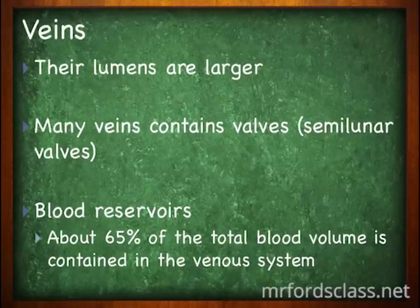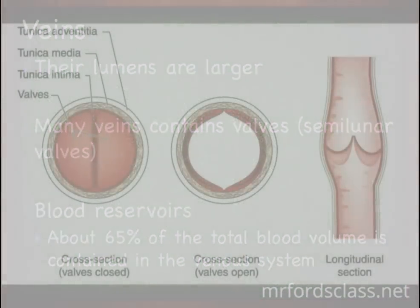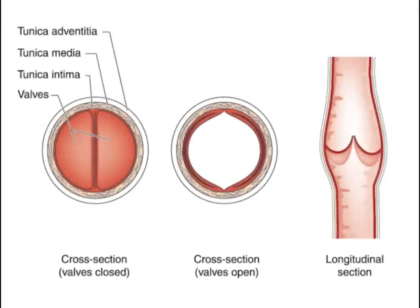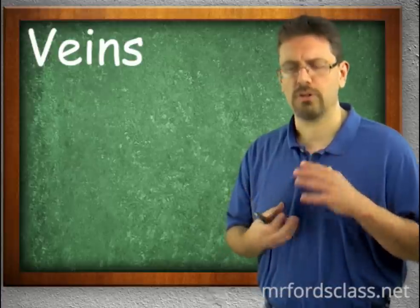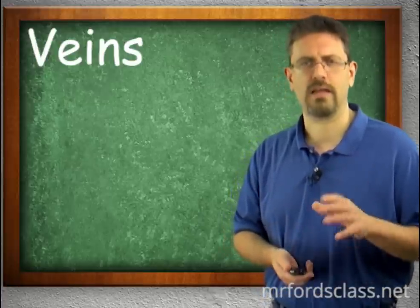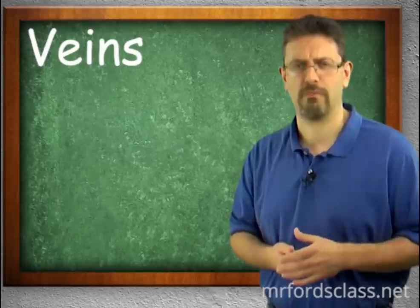Veins have a larger lumen — the hollow opening — than arteries. Many veins also contain semi-lunar valves, which should sound familiar from your studies of the heart. Veins are also a blood reservoir: about 65% of the total blood volume can be found in your veins. We'll take a closer look at veins in another video.